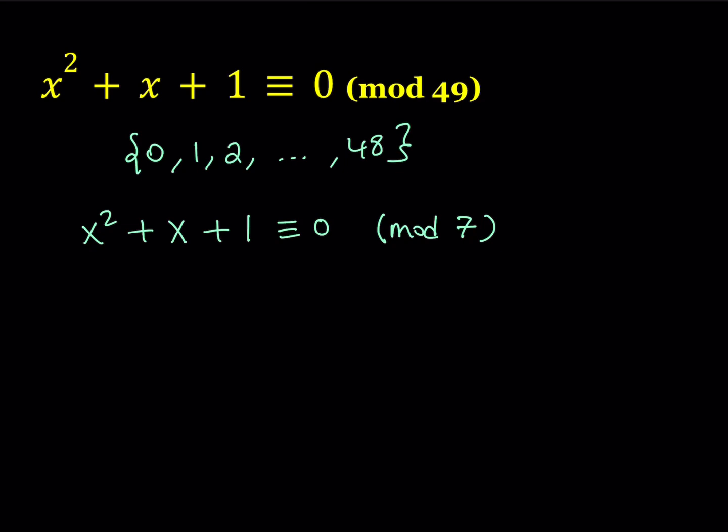So trial and error is definitely going to work. Or you can use another method here, which I'm going to show you, which is kind of cool. Well, since 1 is congruent to negative 6 mod 7, I can just go ahead and write this congruent statement as follows. x squared plus x minus 6 is congruent to 0.